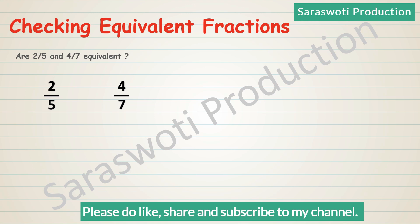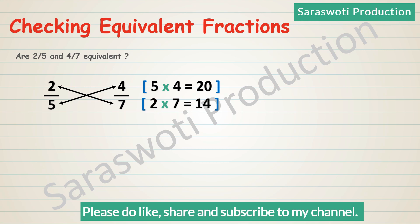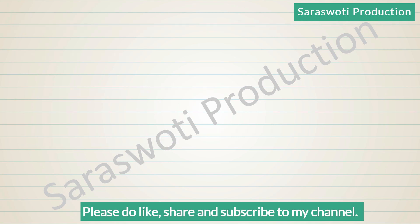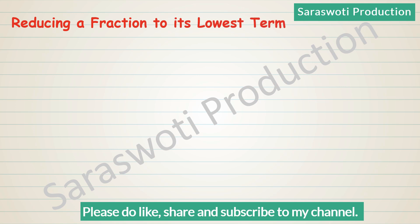Are 2/5 and 4/7 equivalent? For 2/5 and 4/7: 5×4 equals 20, and 2×7 equals 14. Since the cross products are not equal, the fractions are not equivalent. Answer: 2/5 and 4/7 are not equivalent.